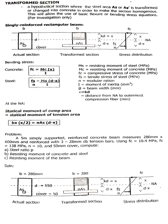The moment of inertia is I. That is the formula for concrete. For steel, fs over n, where fs is the tensile stress of steel in megapascal, n is the modular ratio, Ms is the resisting moment of steel, and d minus x is the distance from the neutral axis to the steel. The formula is fs over n equals Ms times d minus x over I.